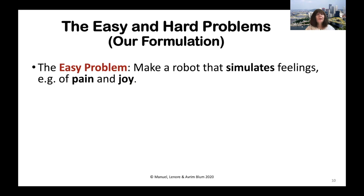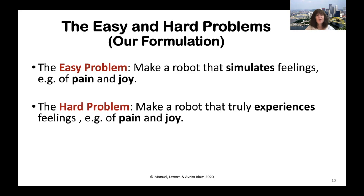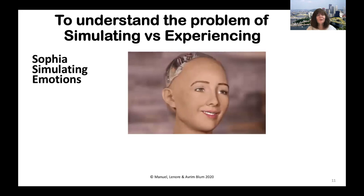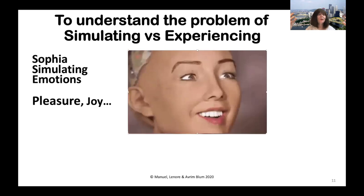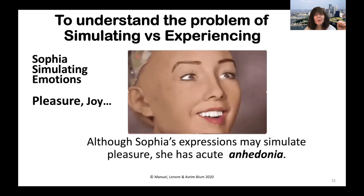Here's our formulation of the easy and hard problems. The easy problem for us is to make a robot that simulates feelings, for example of pain and joy. The hard problem is to make a robot that truly experiences these feelings of pain and joy. Here you have Sophia simulating emotions — she goes through a gamut but ends up with an expression of pleasure and joy.